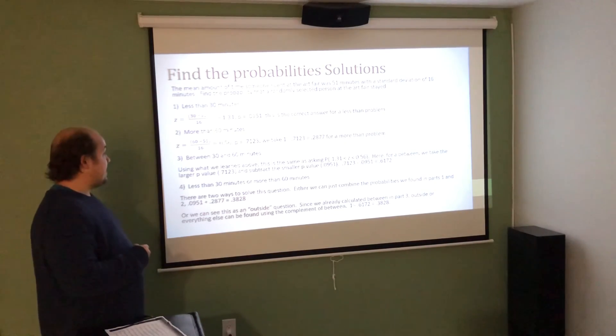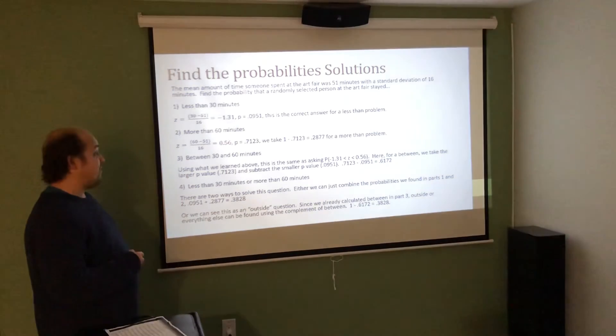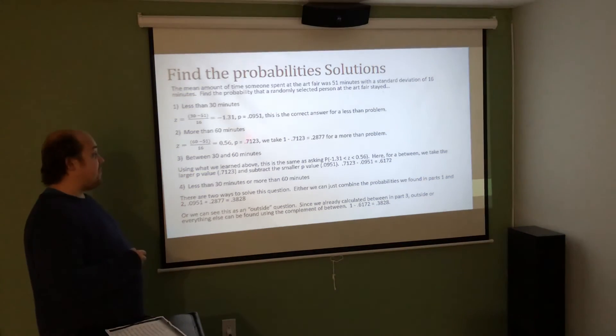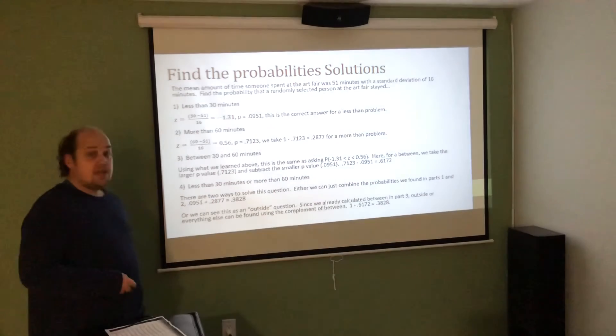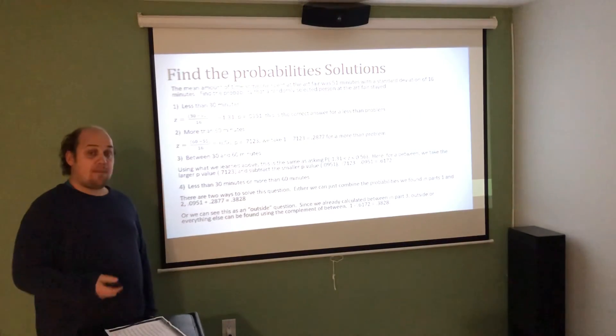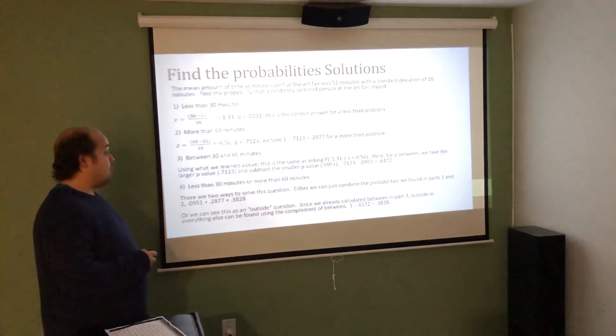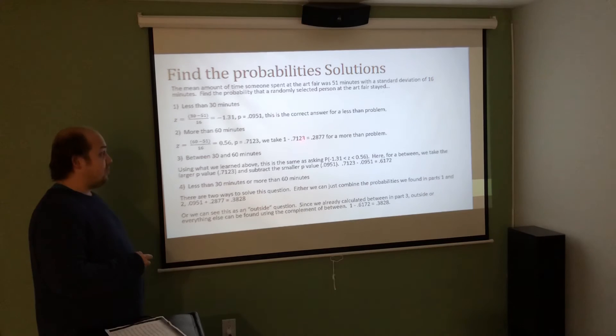For more than 60, I put it into the formula. I find out that it has a z-score of 0.56, which has a p-value of 0.7123. Since a more than question is 1 minus the table value, I do 1 minus 0.7123 to get my final answer of 0.2877 for the probability it's more than 60 minutes they stay at the art fair.